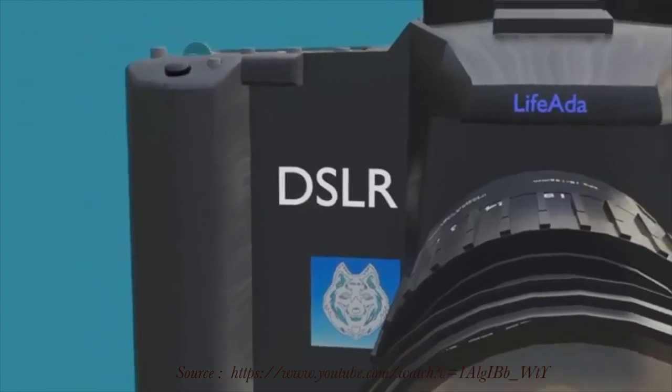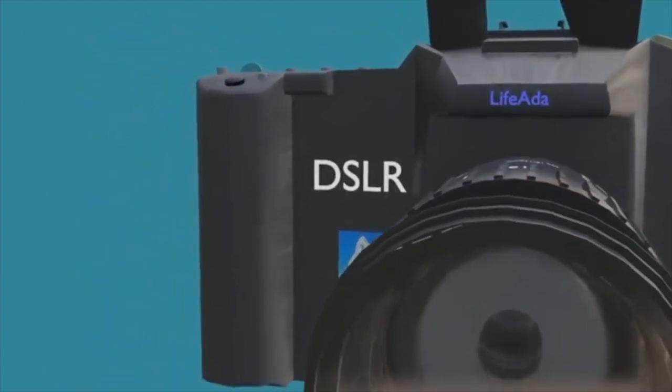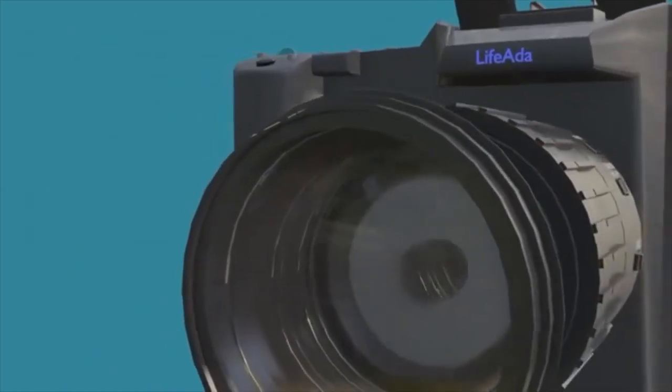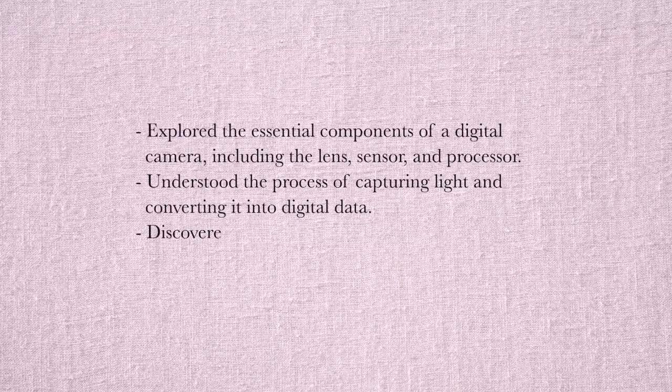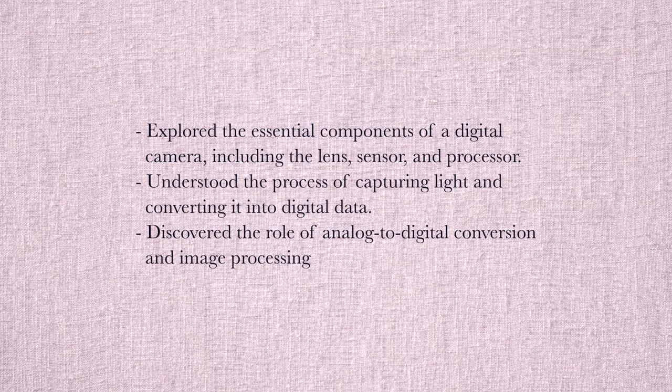In conclusion, we have covered the complete workings of a DSLR and the fundamentals of digital cameras in Part 1 of this video. We explored the essential components of a digital camera including the lens, sensor, and processor; understood the process of capturing light and converting it to digital data; and discovered the role of analog-to-digital conversion and image processing. We have just scratched the surface of the incredible world of digital photography, and understanding these basics is crucial as they form the foundation of your journey as a photographer.